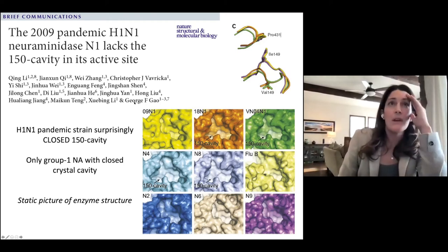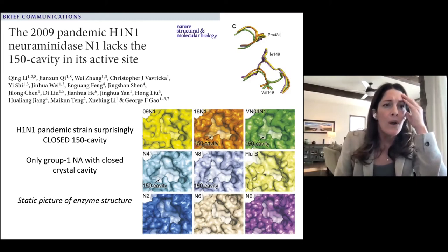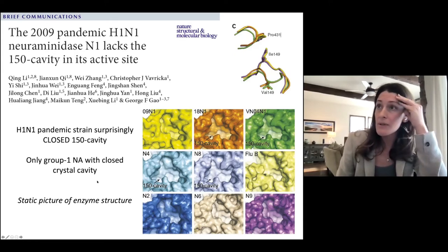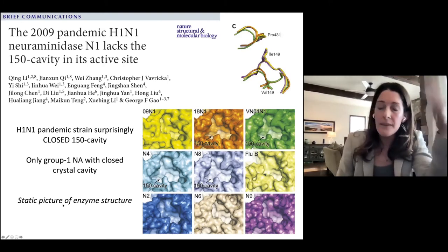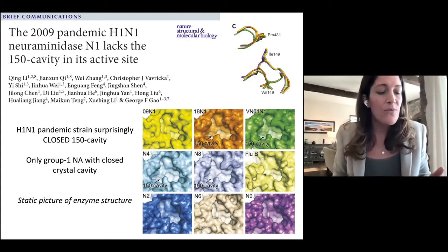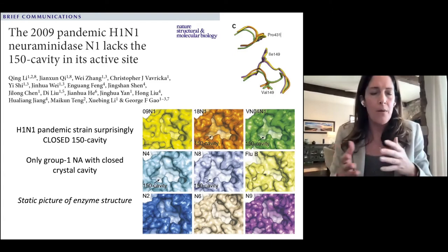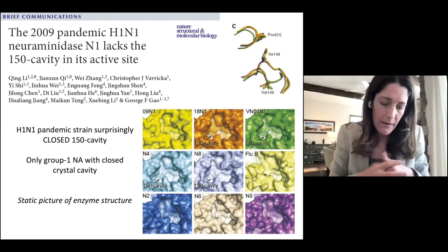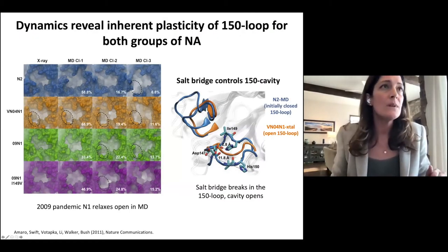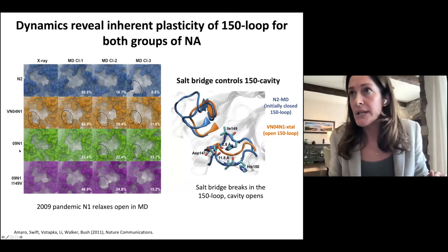Then a structure was published a couple of years later showing that the H1N1 pandemic strain of neuraminidase actually had a closed 150 cavity — it appeared to be the only group one crystal with a closed structure. We saw this and said, let's see what we can do with it, because one of the things we're very excited about is moving from static understandings of structure to getting at dynamics.